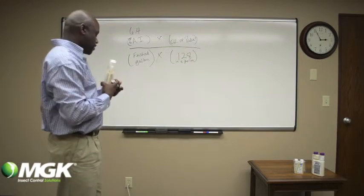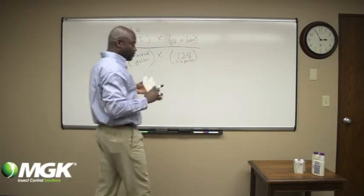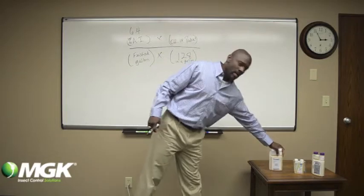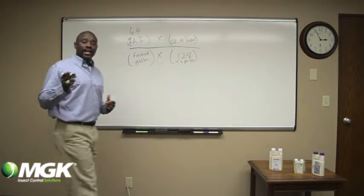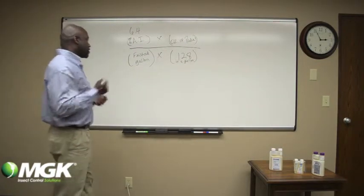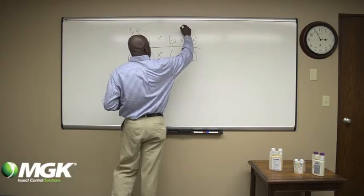Next, you'll need to know how much you're going to use. If you decide you're going to use, for this we'll say one ounce per gallon, which is the high concentration of Onslaught. So we've got ounces per gallon, we'll put one.